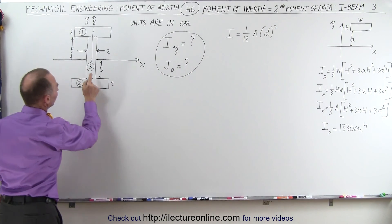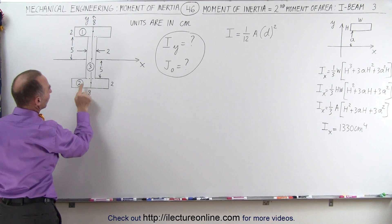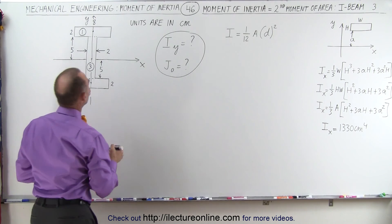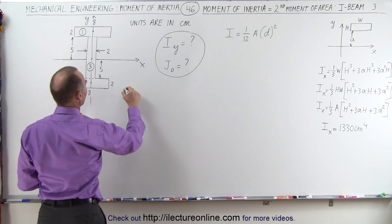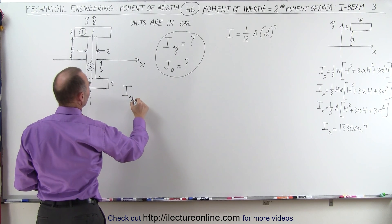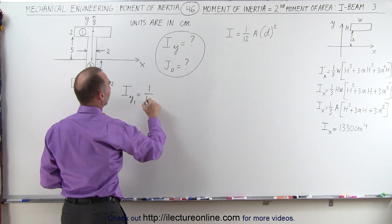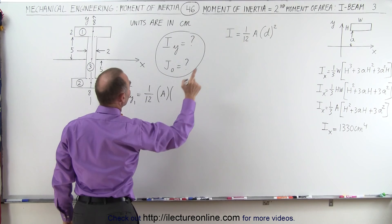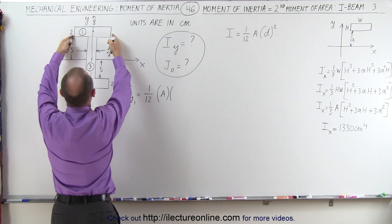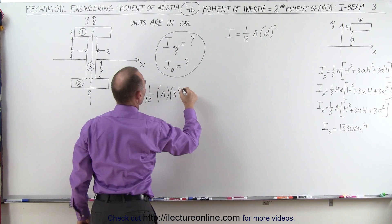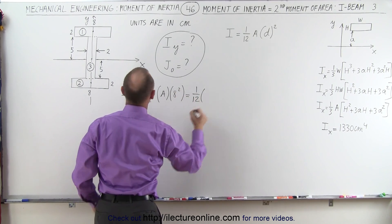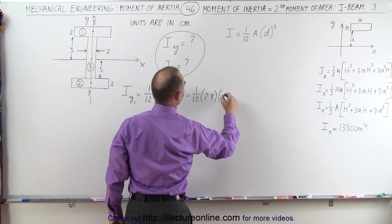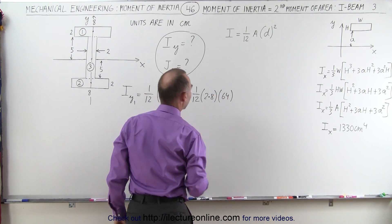If we're rotating about the Y-axis, we take this distance for the section. For section 1, the moment of inertia relative to the Y-axis is equal to 1/12 times the area of that section times that distance squared, so it would be this distance right here, which is 8 squared. That's 1/12 times the area, which is 2 times 8, or 16, times 8 squared, which is 64.